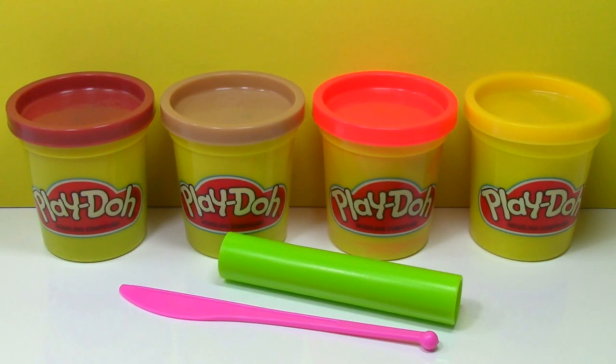Hi everyone. Today I'm going to show you how to make a hot dog and bun with ketchup and mustard using four cans of Play-Doh, a roller, and a Play-Doh knife.